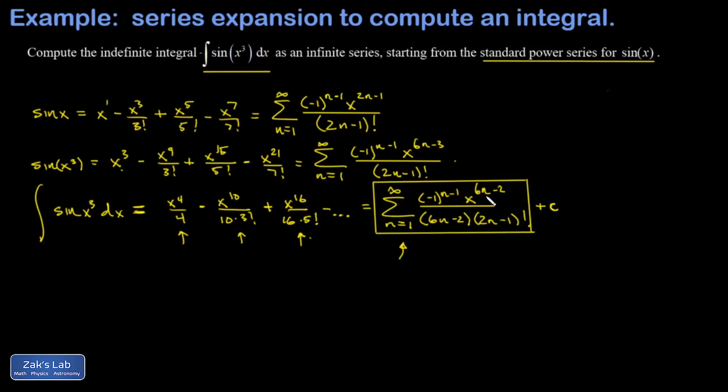When I plug in that n equals 1 into my x term, I end up with 6 minus 2 for the exponent or 4, so I have that working. In the denominator I get a 6 minus 2 here, which is 4 times 2n minus 1, or 1 factorial, so the denominator comes out to 4. The first term works.